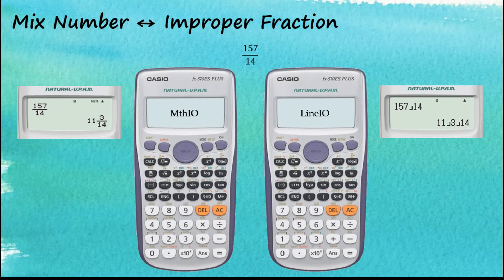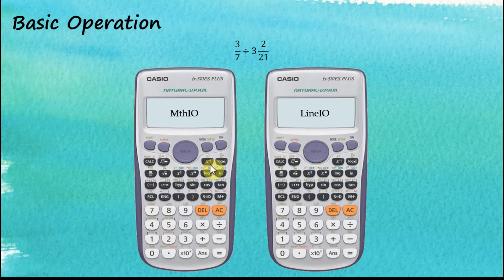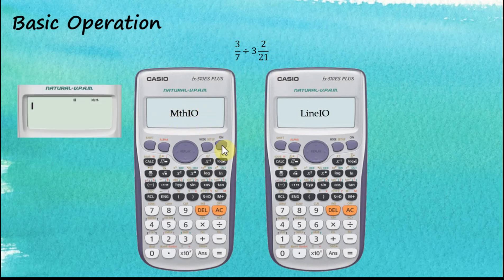That's how we change mixed numbers to improper fractions and improper fractions back to mixed numbers. Let's continue with the basic operations of fractions. For the Math input, we have a proper fraction here.